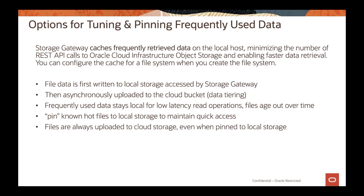For tuning and pinning frequently used data: the storage gateway synchronizes data from the appliance to OCI object storage. When a user or application retrieves a file, it is fetched from OCI object storage to the storage gateway. If a file is frequently retrieved, storage gateway recognizes that and caches it locally, so you don't have to always request data from object storage.